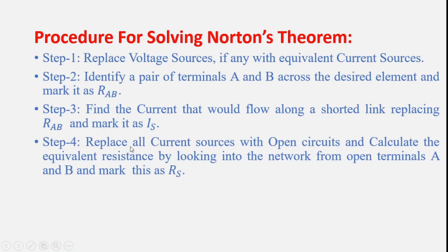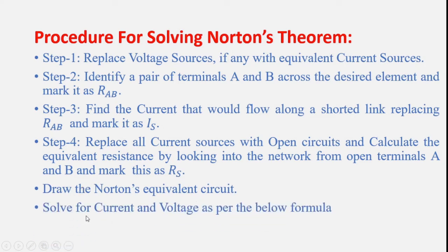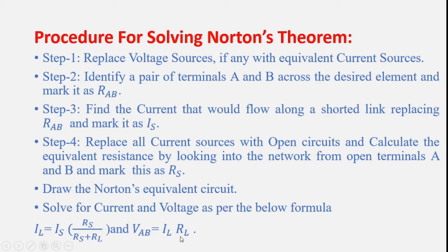Step 4: Replace all current sources with open circuit and calculate the equivalent resistance by looking into the network from open terminals A and B, and mark this as RS. Draw the Norton's equivalent circuit. Solve for current and voltages using the formula: IL equals IS multiplied by RS divided by RS plus RL, and VAB equals IL into RL.